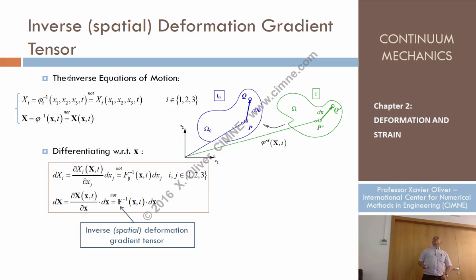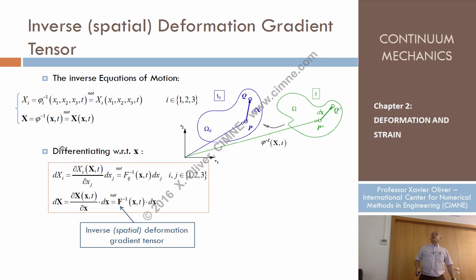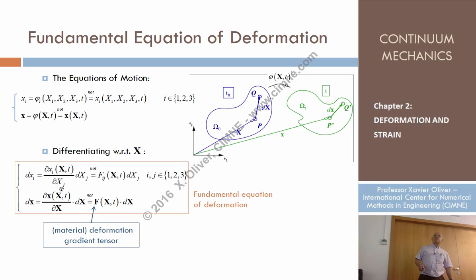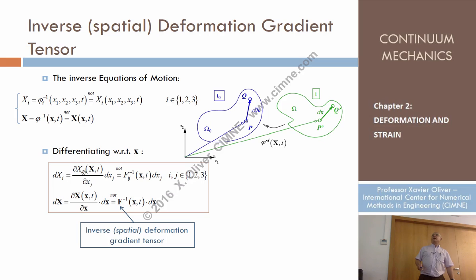We can elaborate a little more. Let's consider the inverse equations of motion — the equations that provide the material position in terms of the spatial position. We can pass from one to the other by inverting the equations of motion. Differentiating capital X with respect to small x, we obtain a similar equation with terms that are derivatives of capital Xi with respect to small xj.